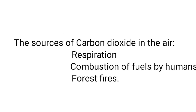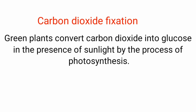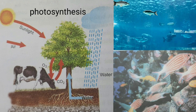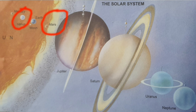Other sources of carbon dioxide in the air are combustion of fuel by humans and forest fires, which liberate high amounts of CO₂. Still, the percentage of CO₂ in air remains only 0.03%, because it is fixed in two ways: green plants convert CO₂ into glucose via photosynthesis, and marine animals use carbonates dissolved in sea water to make their shells. On planets like Venus and Mars, there is no life because the major component of their atmosphere is carbon dioxide.